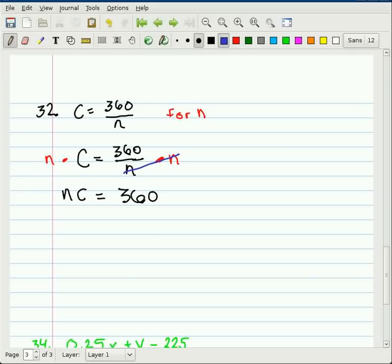Okay. Now we have n times c equals 360. We want to end up with n equals, so we have to do the inverse operation for n times c, which is to divide by c. On both sides. And when you do that, the c's cancel. And we end up with our solution, which is n equals 360 over c.